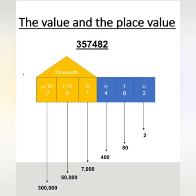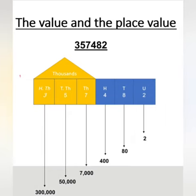Now you know the value and the place value. The value of each digit in any number depends on its place in the number. For example, take the number three hundred fifty-seven thousand four hundred and eighty-two. The 2 is in the units place, 8 is in the tens place, and 4 is in the hundreds place.